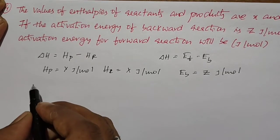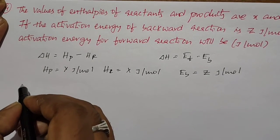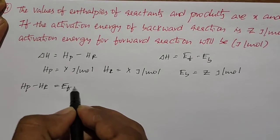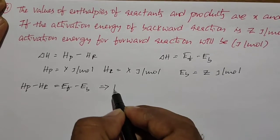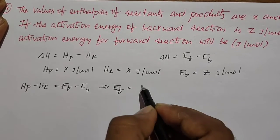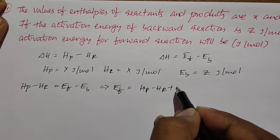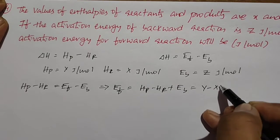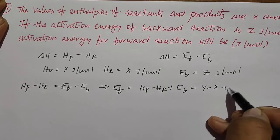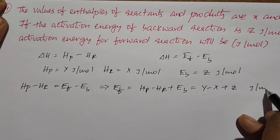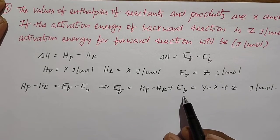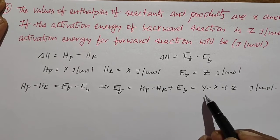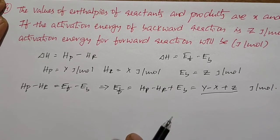Now substitute the values in the formula. The formula is: ΔH = HP − HR = Ef − Eb. So Ef = HP − HR + Eb. Substituting: HP means Y, HR means X, Eb means Z. So Ef = Y − X + Z joules per mole. This is the activation energy of the forward reaction.